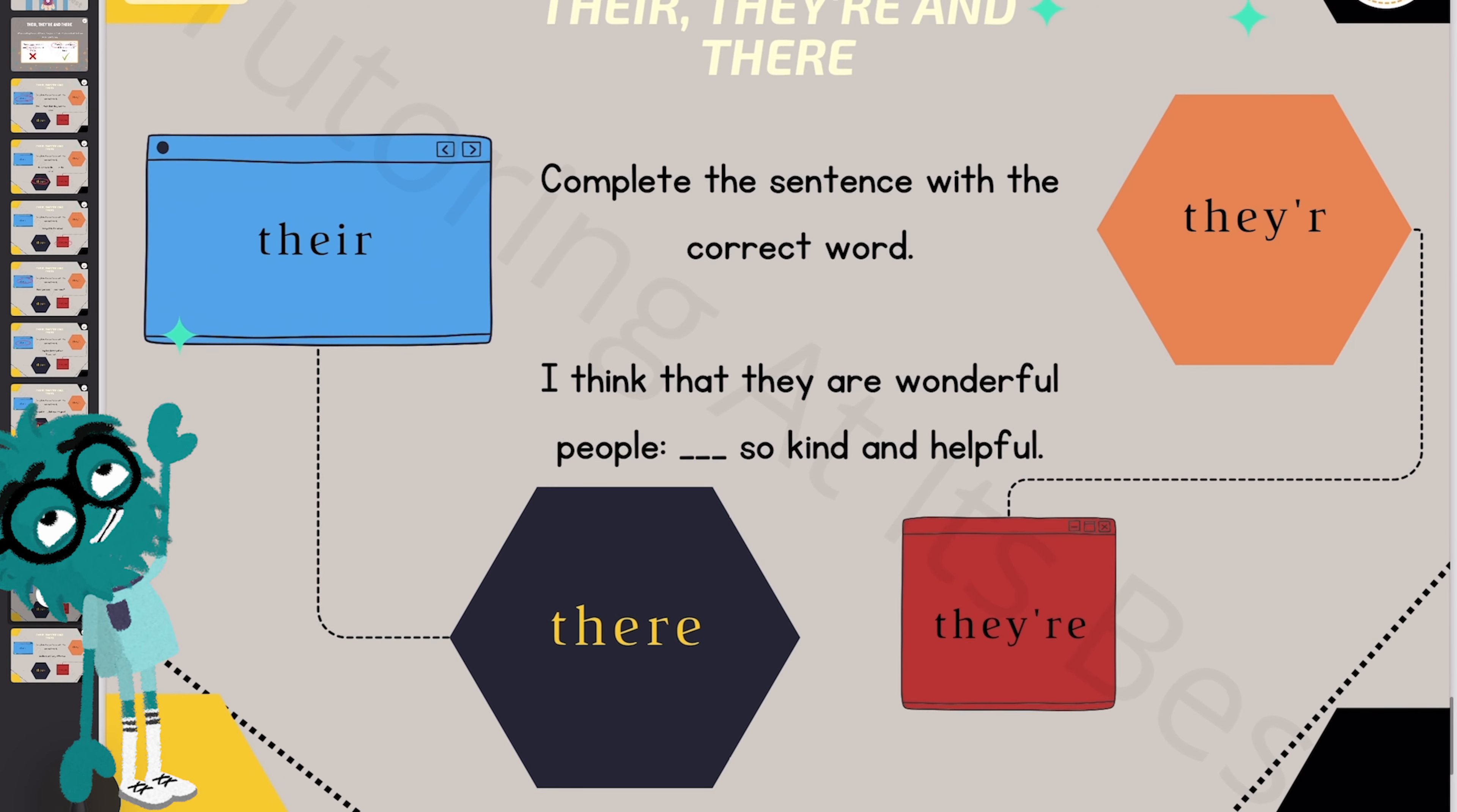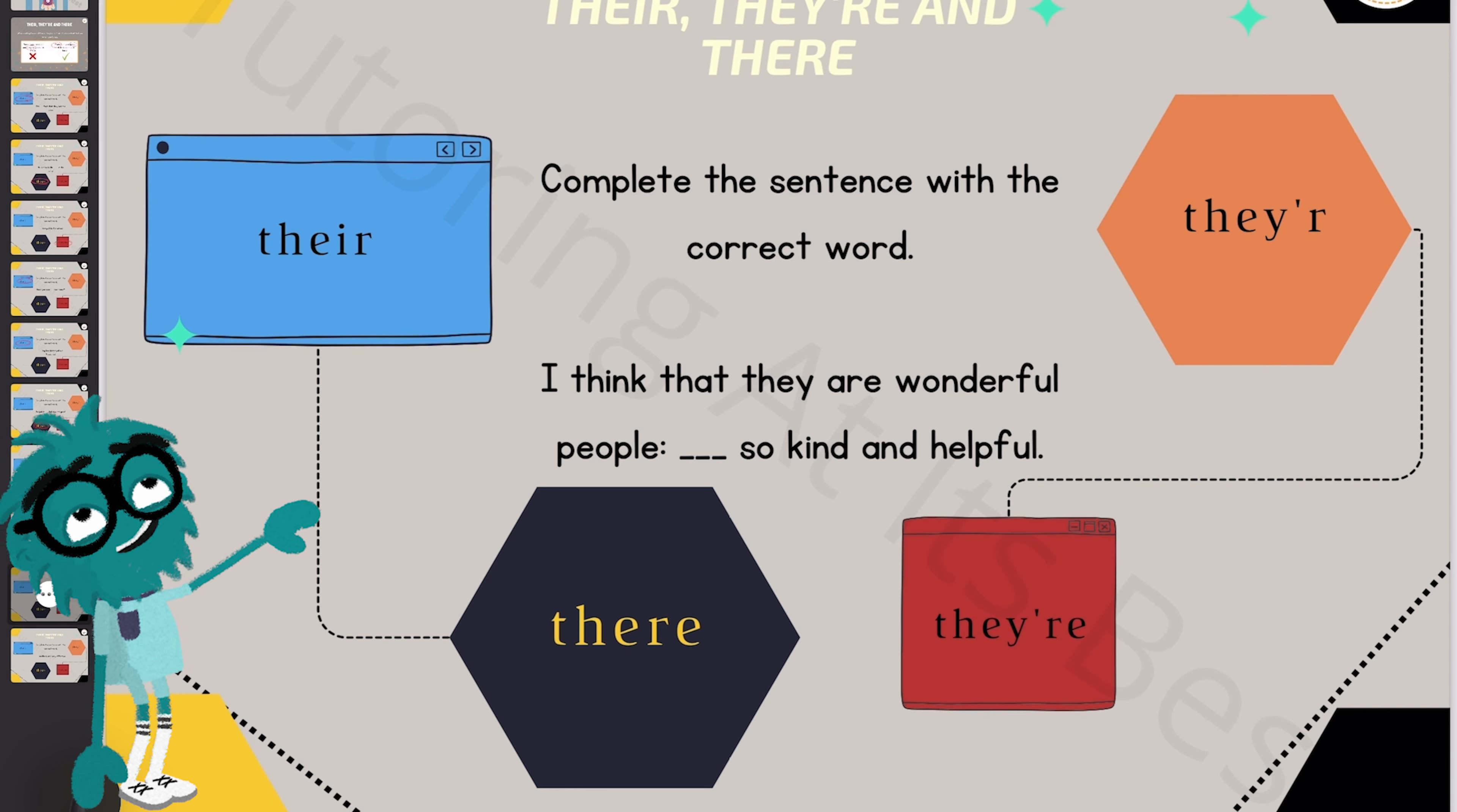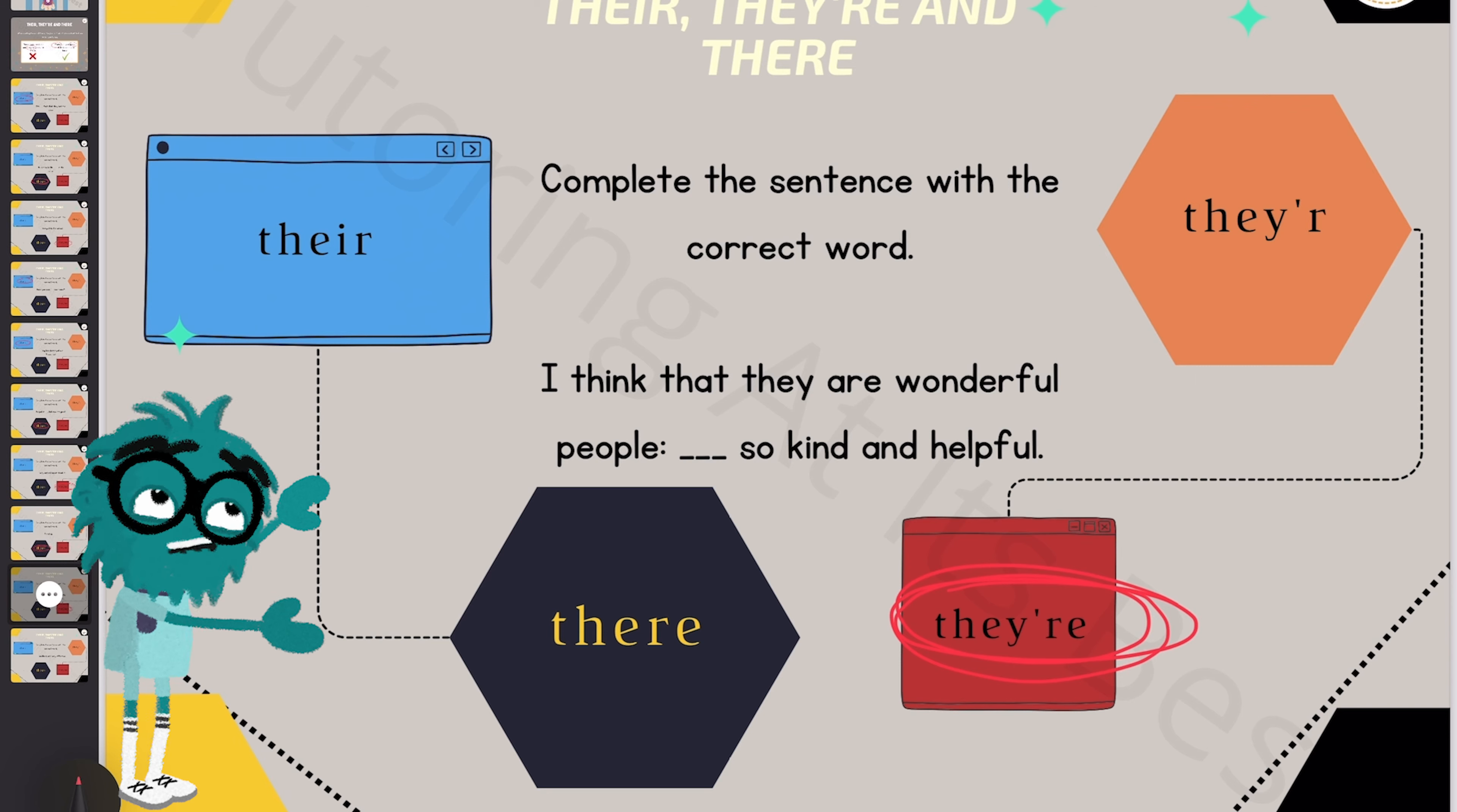Okay, next question. I think they are wonderful people. They're so kind and helpful. So the sentence states who is so kind and helpful, so you need they are, which is they're. They are so kind and helpful.